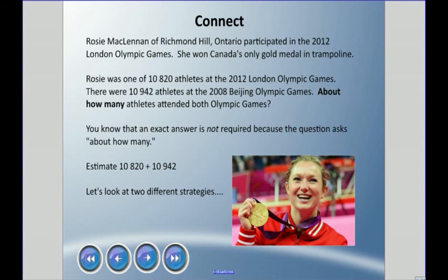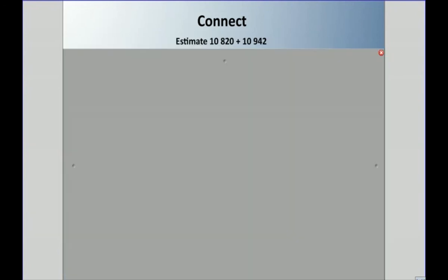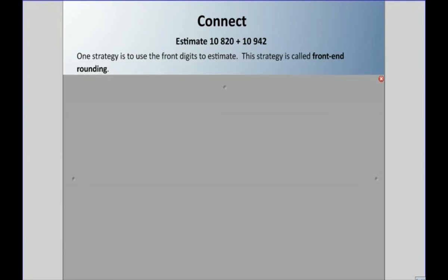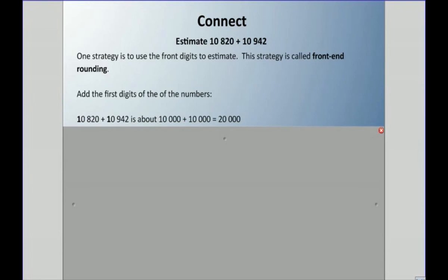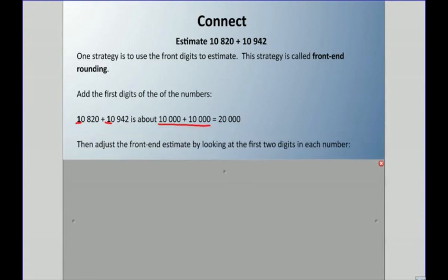We have 10,820 plus 10,942. One strategy is called front-end rounding, where we only add the first digits of the numbers. The first digit is a 1 and a 1 — and those ones are in the ten-thousands place, so that actually means 10,000 plus 10,000, which is about 20,000.